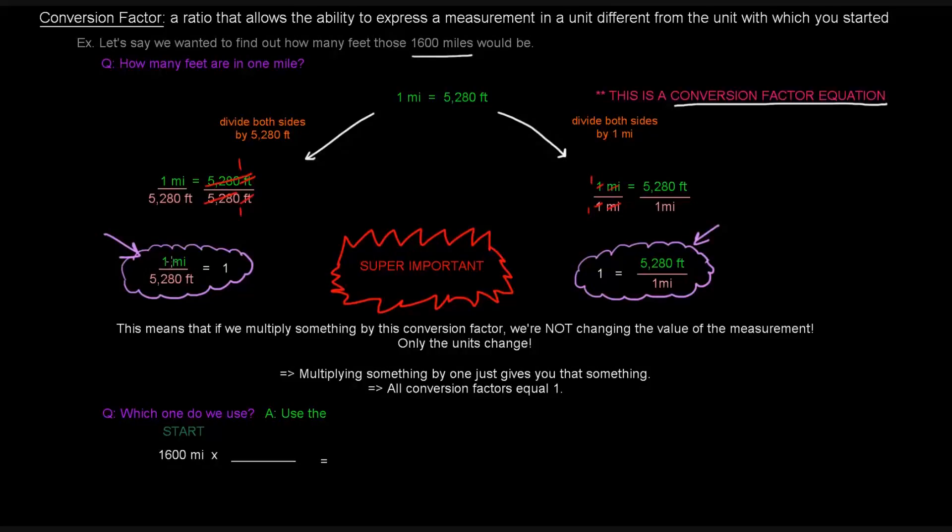Notice that one mile, because it's defined as 5,280 feet, equals one. This ratio is the conversion factor. The conversion factor is a ratio, and this ratio equals one. Over here also, this is a conversion factor. It's a ratio, and this ratio equals one.